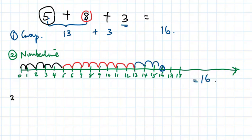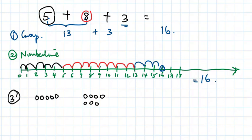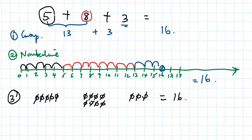The third alternative is to use objects for five plus eight plus three. Draw five objects, then eight objects, then three objects. Count them all together: one through sixteen. You get 16.